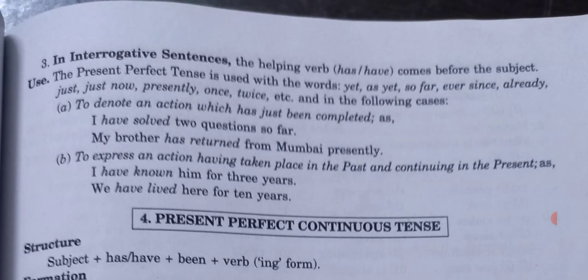Interrogative examples for present perfect — these were not given in the notes, so: 'Have you completed your work?', 'Has she finished her work?', 'Have you eaten something?', 'Has she completed her task?', 'What has she done?', 'What have they spoken?' — these are examples of interrogative sentences in present perfect tense.